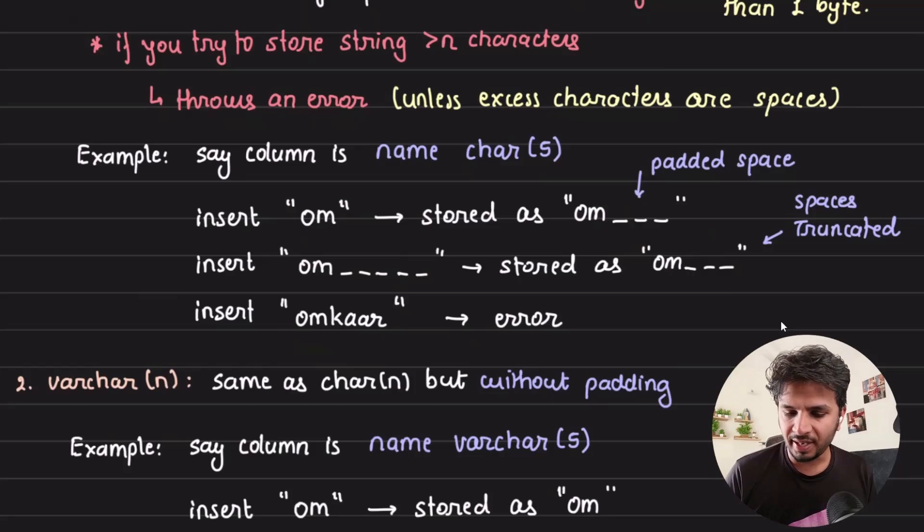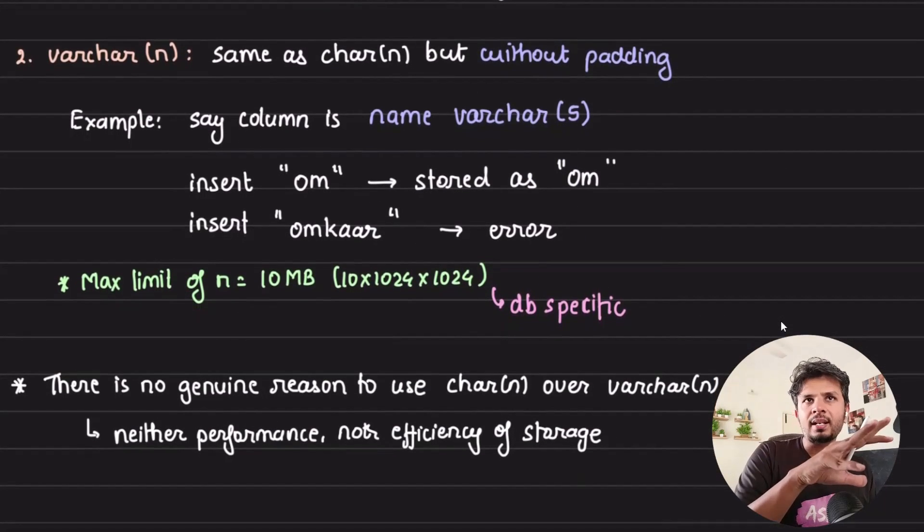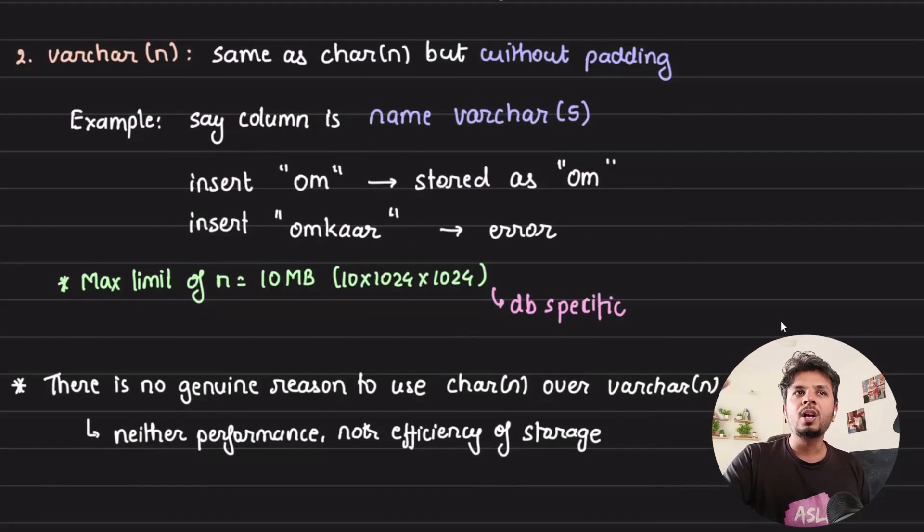The second type is varchar. It is same as char but without padding. If we try to insert "om" it would be stored as "om". If we try to insert "omkar" with a limit of 5, it would throw an error. The maximum limit of n depends on the database.